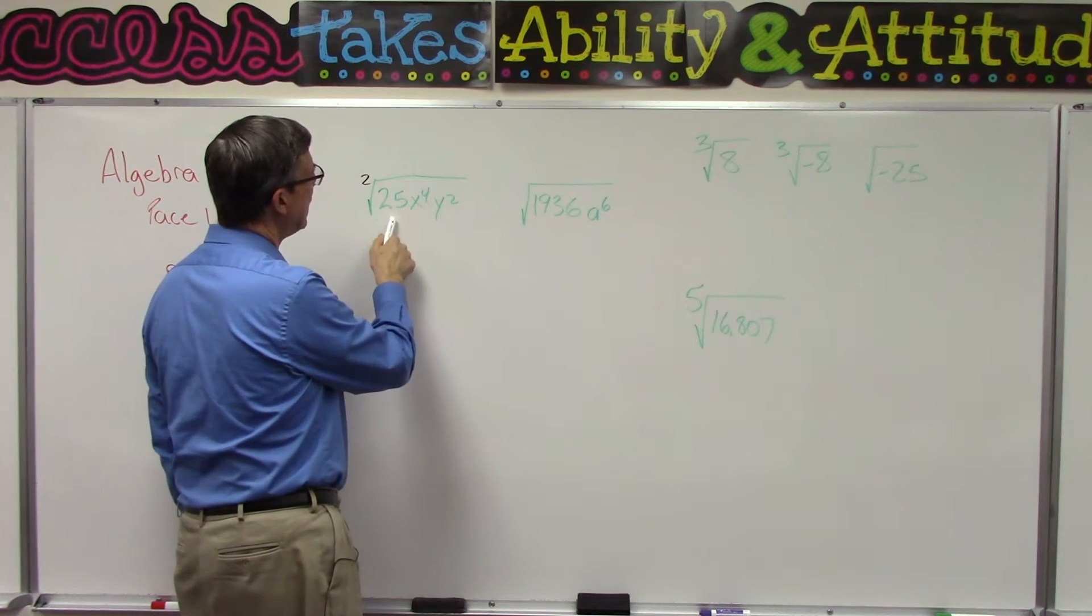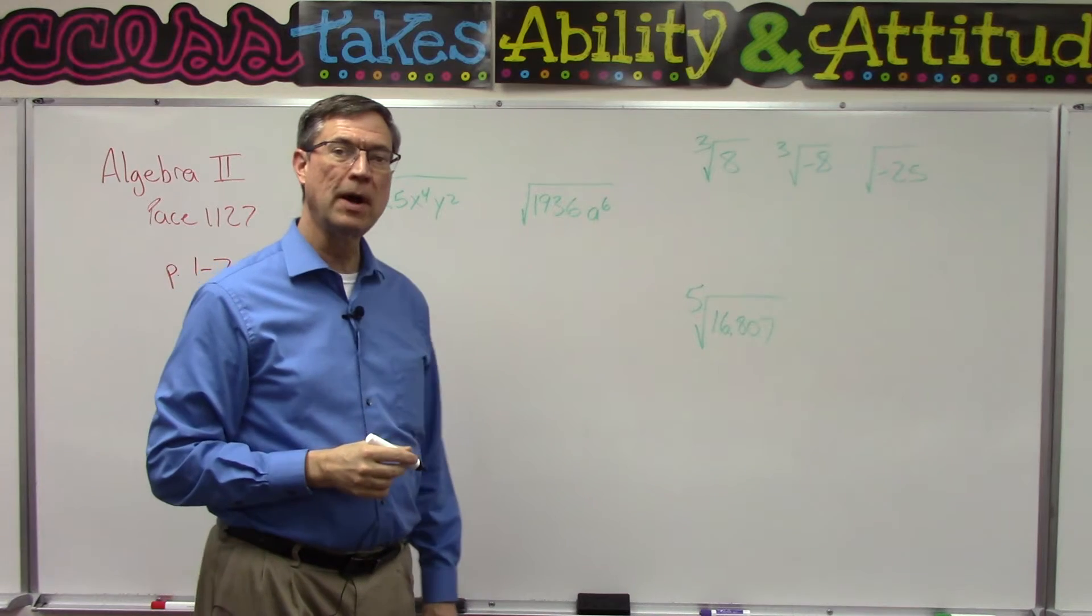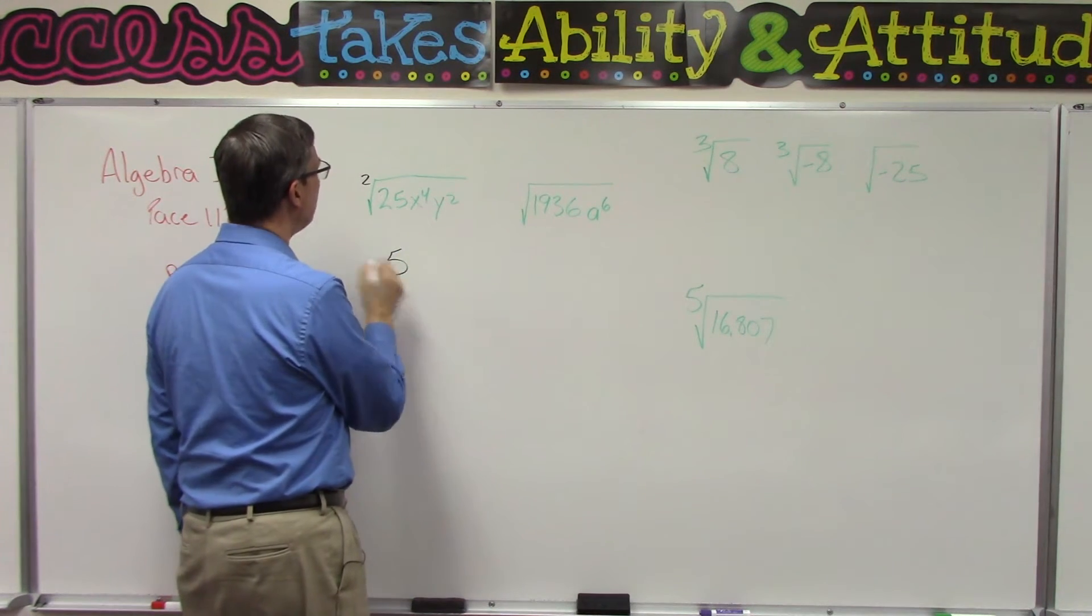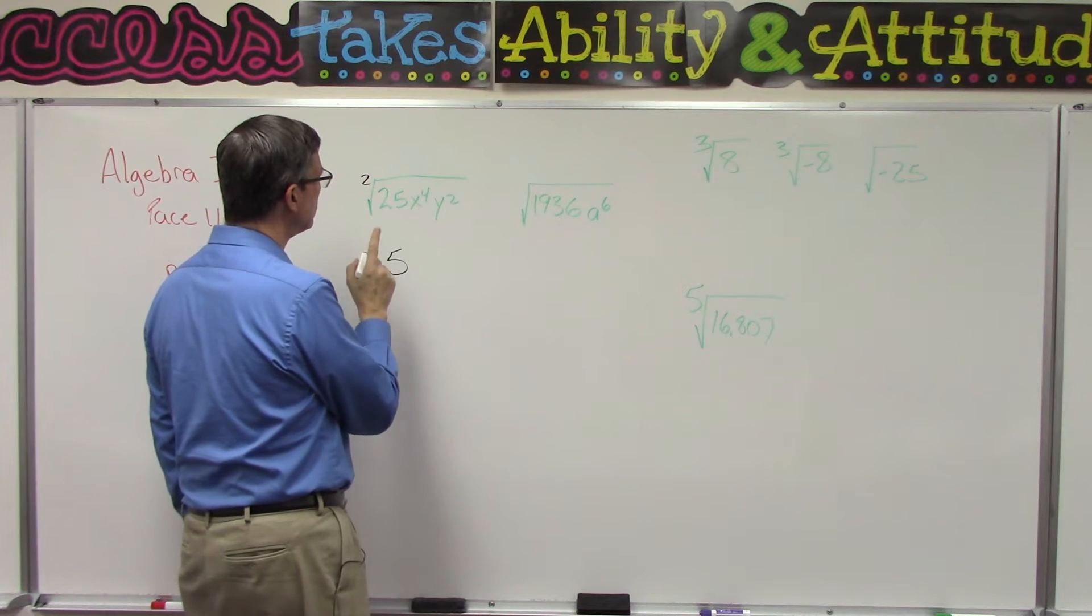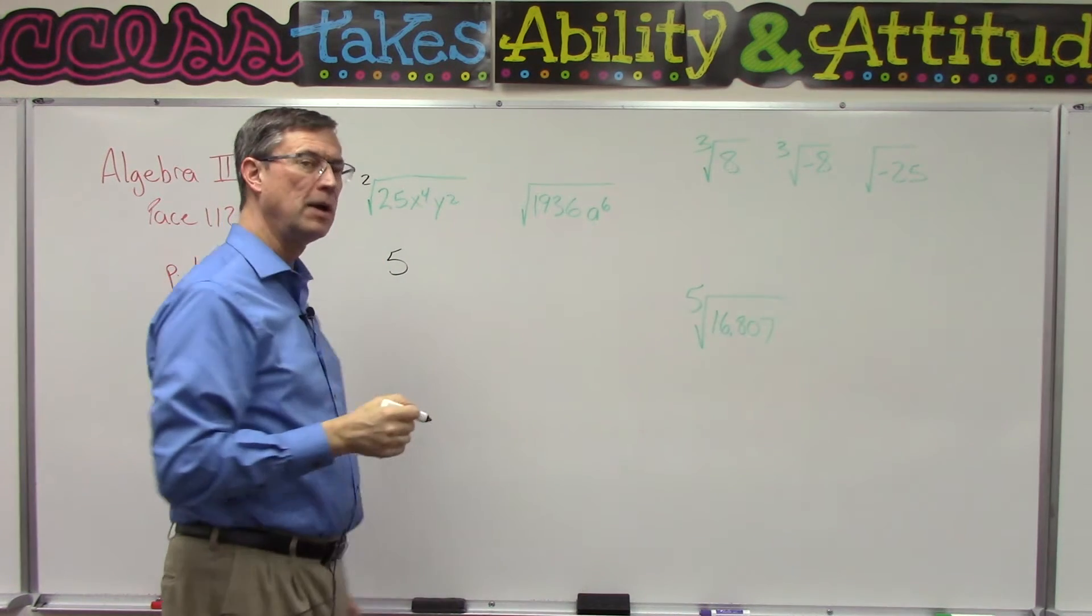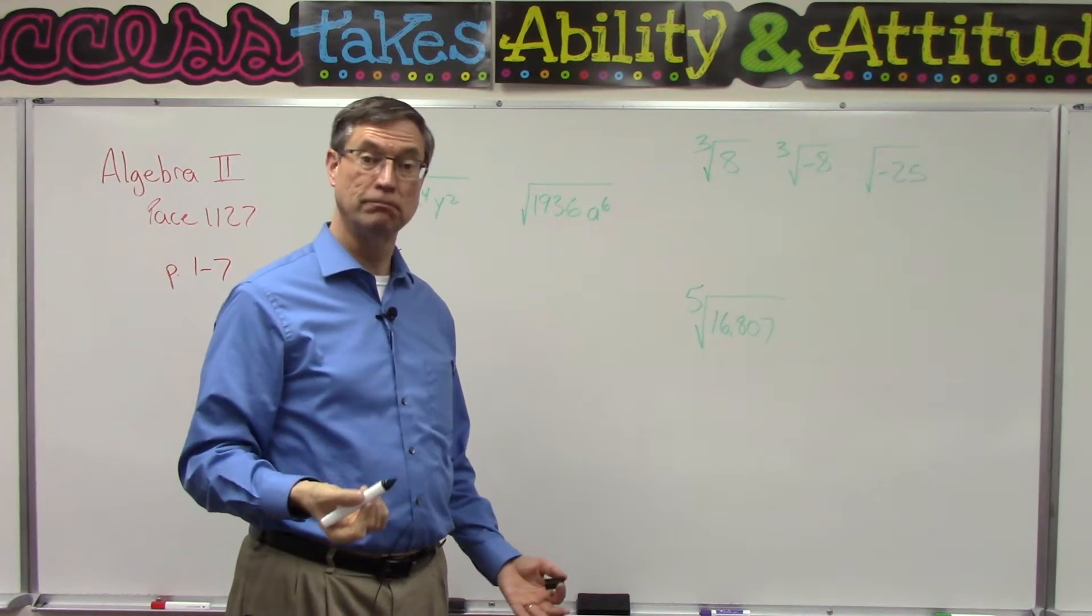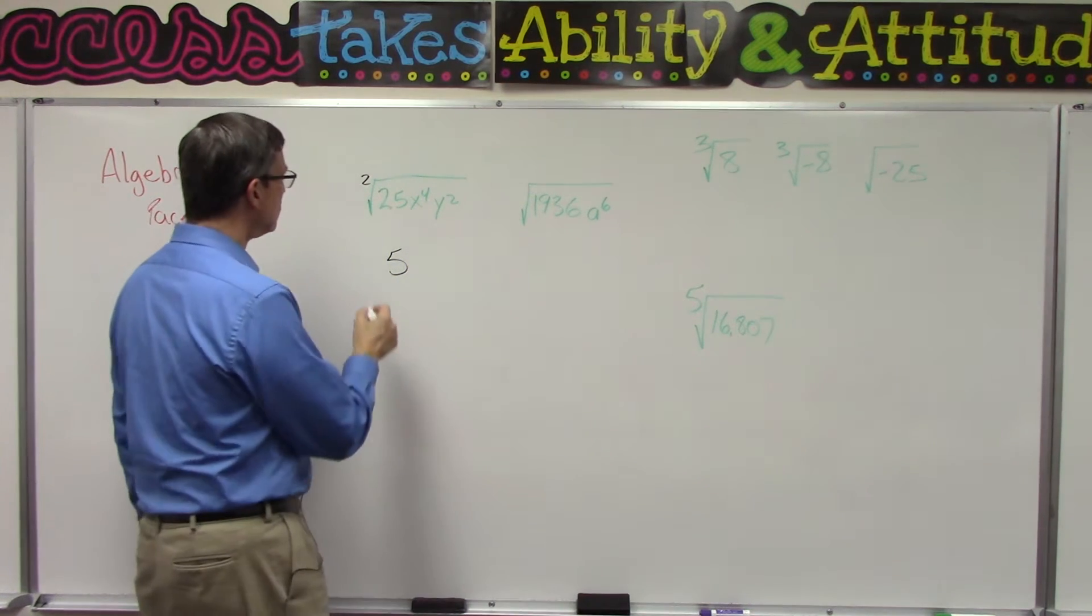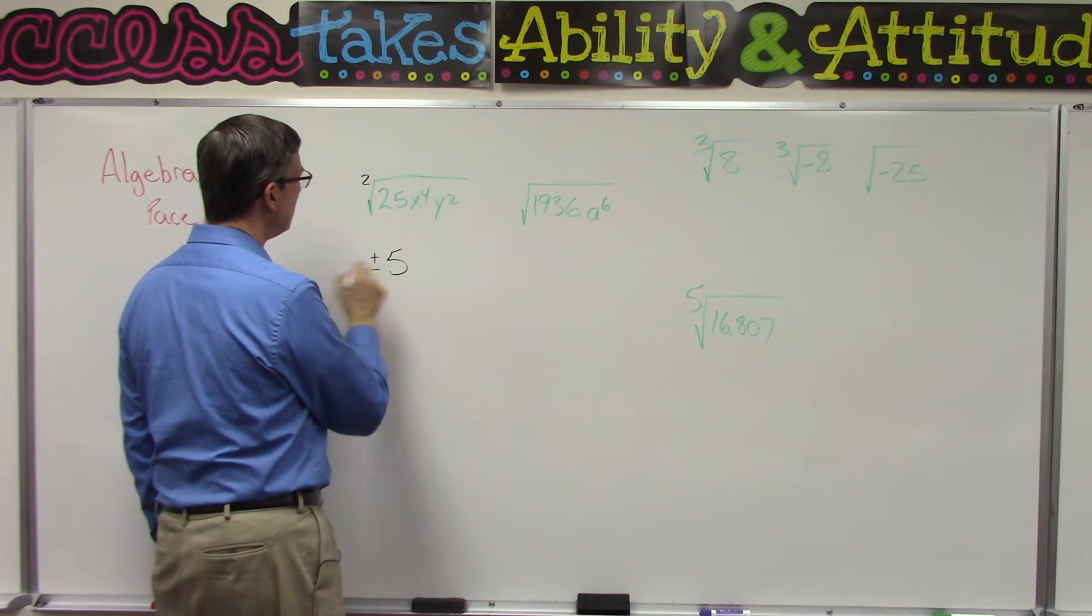So what number times itself gives you 25? And you should get 5, right? Now we also know that negative 5 times negative 5 also equals positive 25, so we should write plus or minus in front of the 5, which means it could be the positive or the negative value.